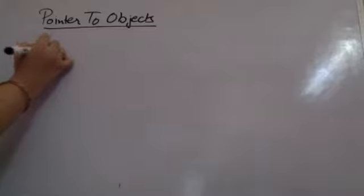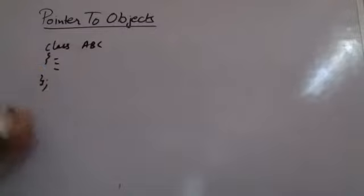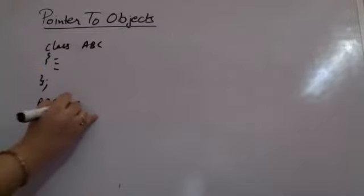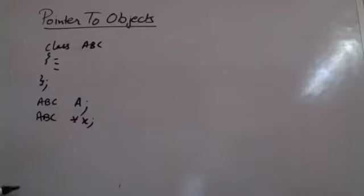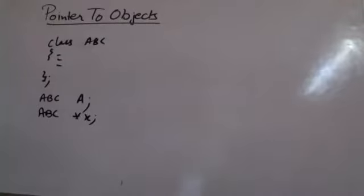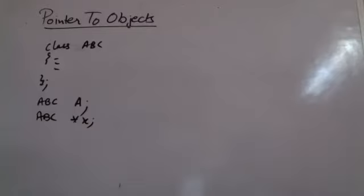When creating a class, say class ABC, to create a normal object we write 'ABC object a'. When creating a pointer to the object, we write 'ABC *x', which creates a pointer that is going to point to an object of that class type — storing the address not of an integer or character but of an entire object of the class.